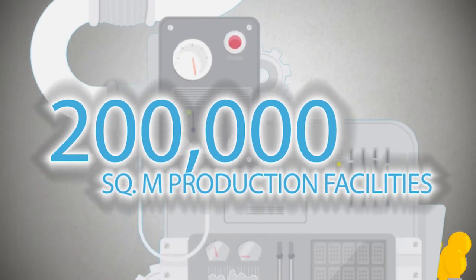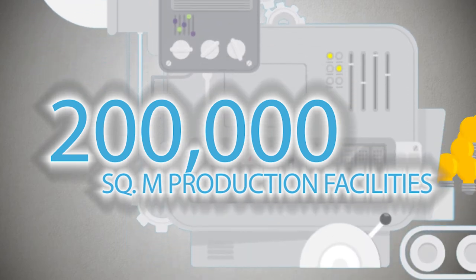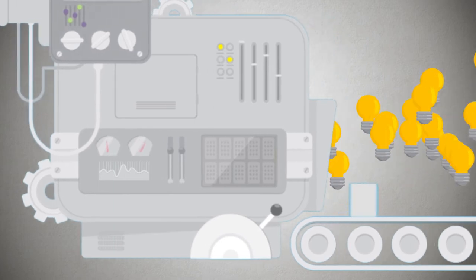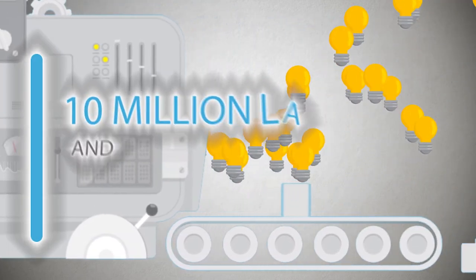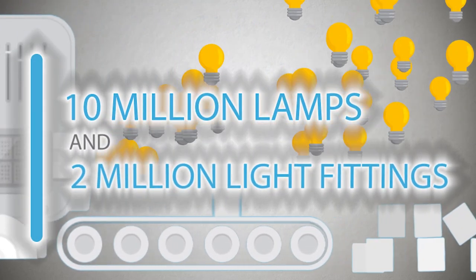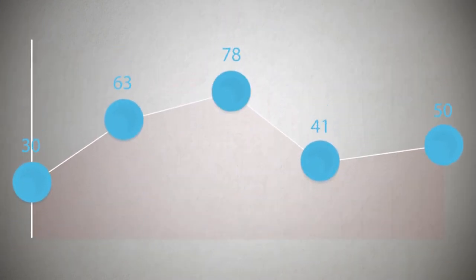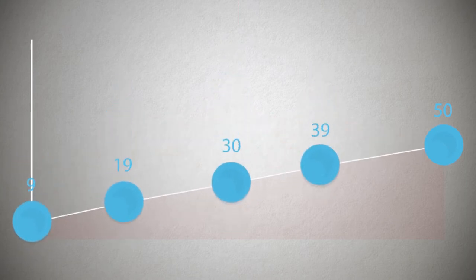At 200,000 square meters of production facilities are producing continuously, so our stocks are being consistently replenished. In a single month we can produce 10 million lamps and 2 million light fittings. These figures increase each year as we grow.